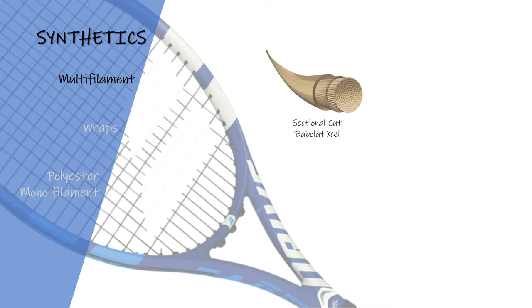Multifilament string is a combination of fibers of different materials more or less elastic, namely polyamide and polyester, which are then wrapped with a more resistant material. The advantages of this type of string are that it allows for good power, comfort, and it allows for good tension maintenance.